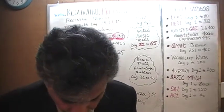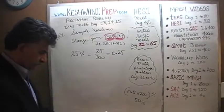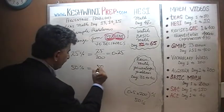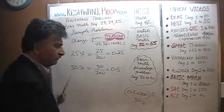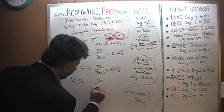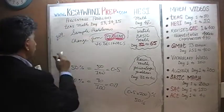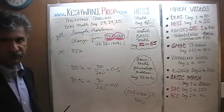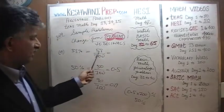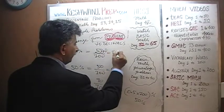Similarly, 50% is 50 over 100, which is 0.5. And 90% is 90 out of 100, which equals 0.9. The first problem, number 4, gives us 58%. That's 58 out of 100 — move the decimal two places left — one, two — and it becomes 0.58.